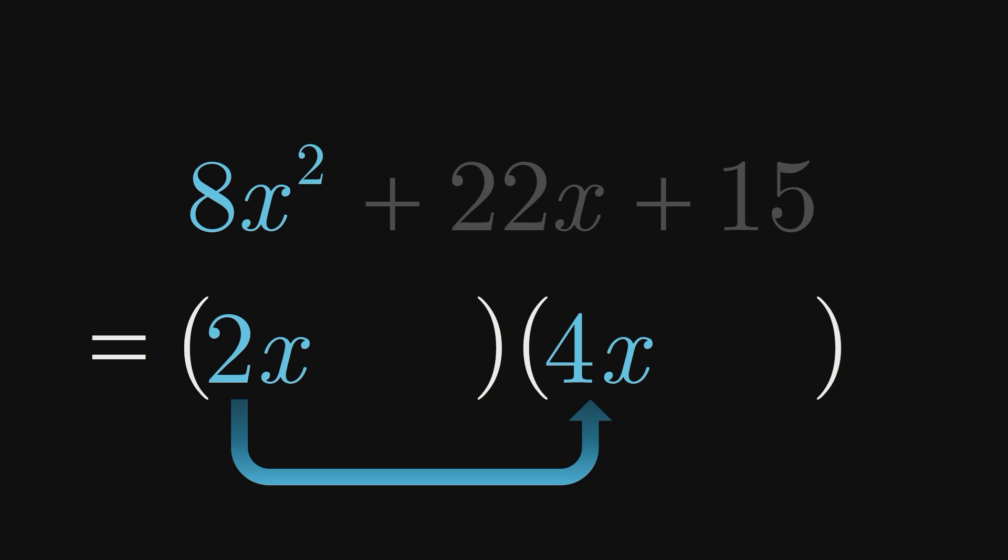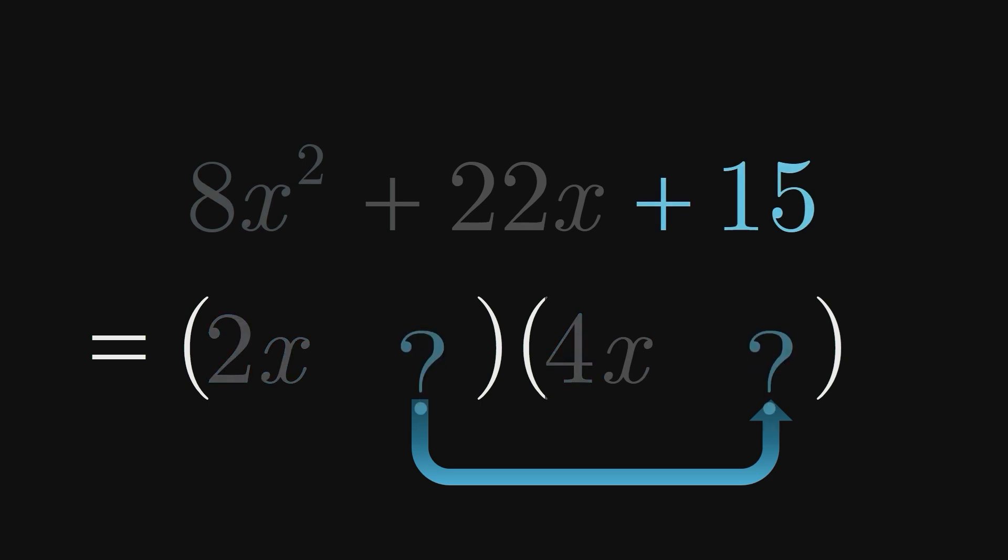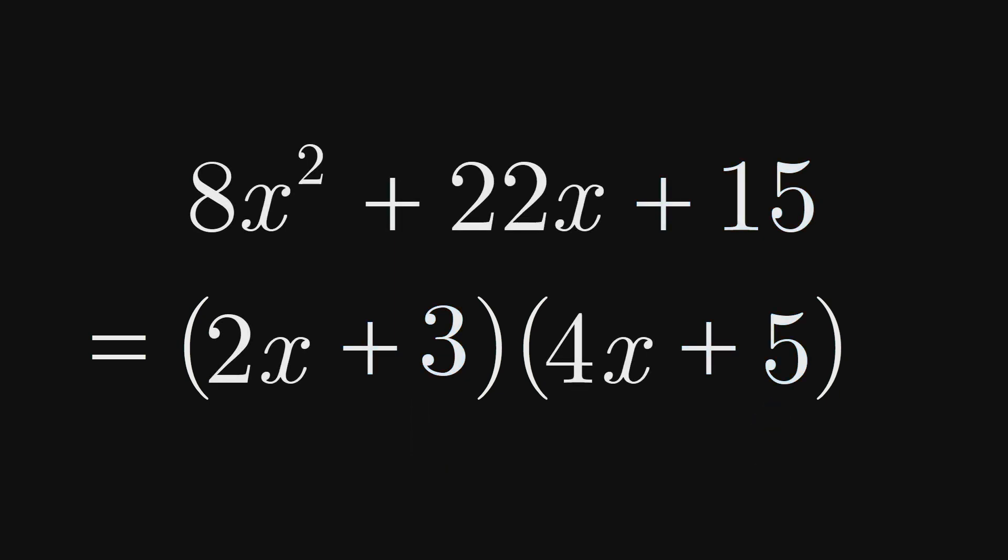Similarly, the constant terms in our factors should multiply to the original trinomial's constant, 15. 1 and 15 multiply to 15, but so do 3 and 5. Which option do we choose? It turns out that we want 3 and 5. Let's see why.